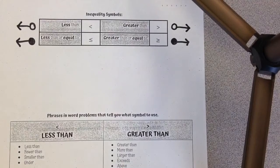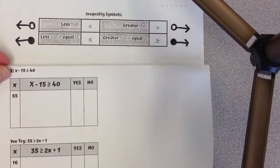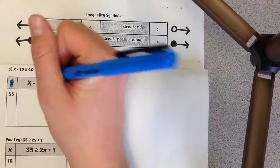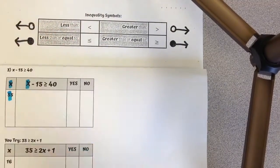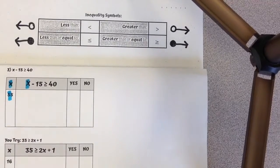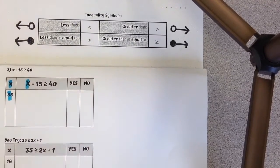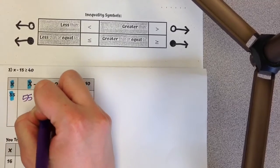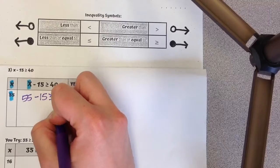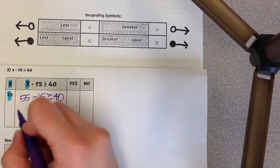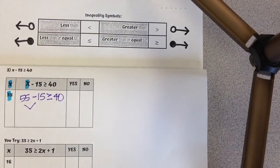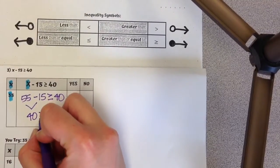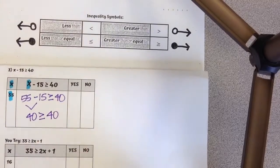Number 3, I'm going to highlight I have x. 55 is being plugged in for x. I want to know if 55 is or is not a solution. So 55 minus 15 is greater than or equal to 40. I'm going to do 55 minus 15, which equals 40. So I want to know, is 40 greater than or equal to 40?